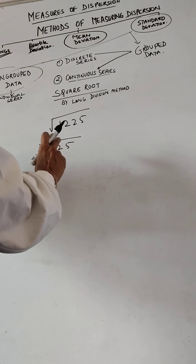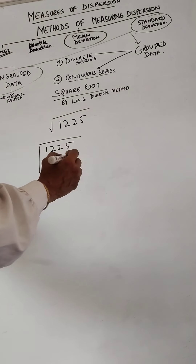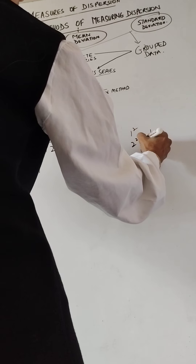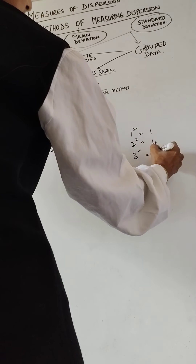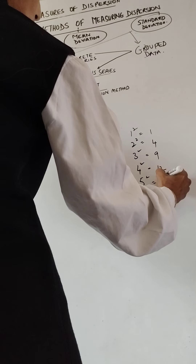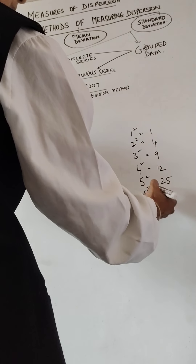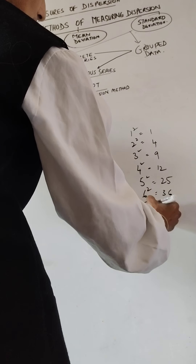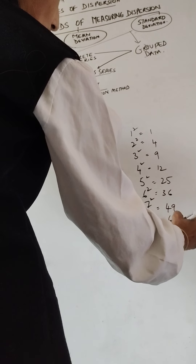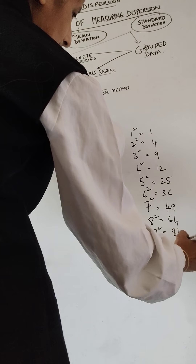We're going to use the same divisor as well as the quotient. Let's just work out some square values for reference: 1²=1, 2²=4, 3²=9, 4²=16, 5²=25, 6²=36, 7²=49, 8²=64, 9²=81, 10²=100.